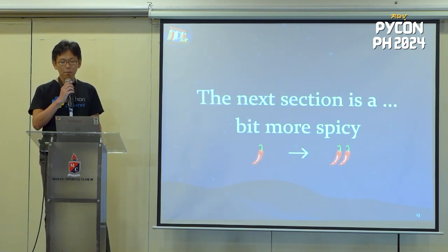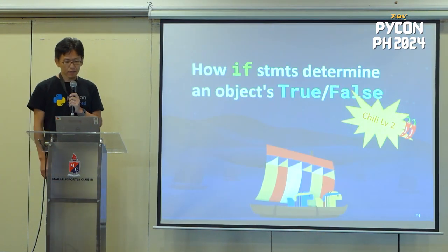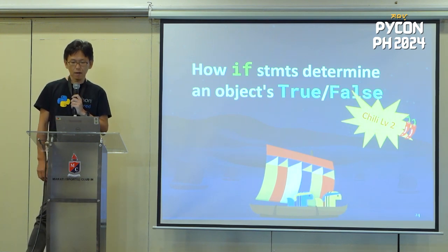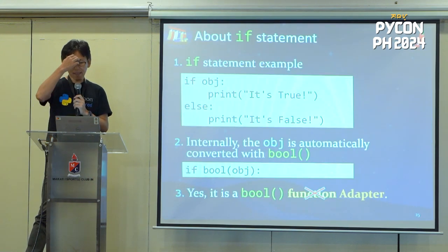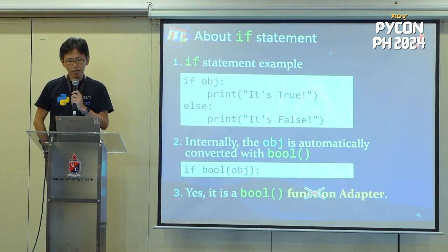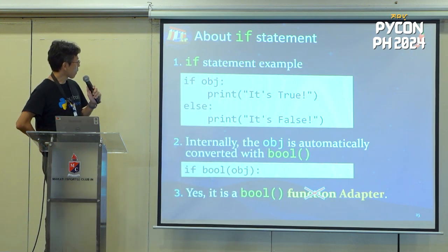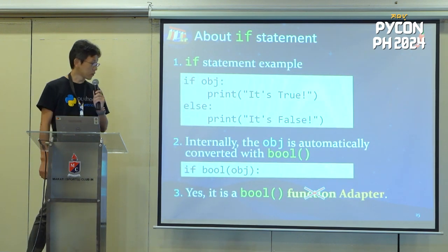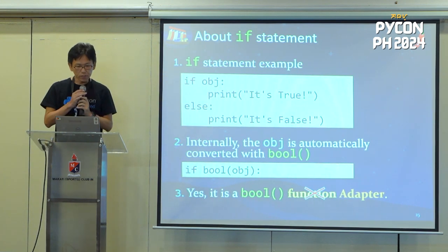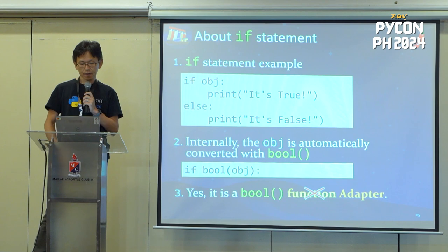That concludes Part One. Next, I'll introduce an example with if statements based on what I've discussed. This is Part Two: how if statements determine objects true or false — level two spicy. Here's an example: if some object is true, it shows 'true'; if not, it shows 'false'. Internally, it's automatically passed to the bool function and converted. So let's start calling the bool function an adapter instead of a function.